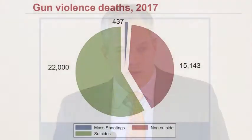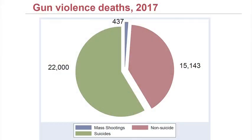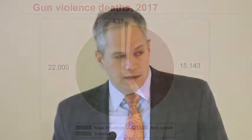Taking it back to the burden of mass shootings: in 2017, there were 22,000 deaths from suicide, 15,000 from homicide, and 437 from mass shootings. And so far in 2018, there have been 2,700 deaths and 4,600 shootings in the United States.